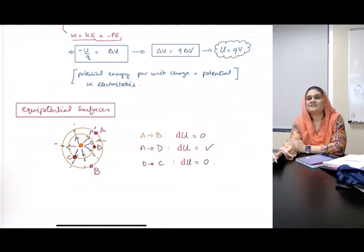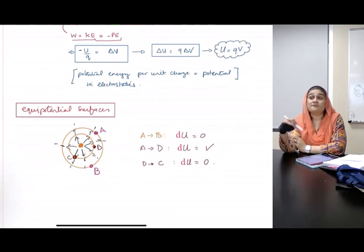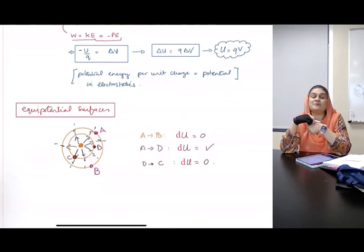Does that make sense? So the surfaces on which there is no gain or loss in potential are called equipotential surfaces.